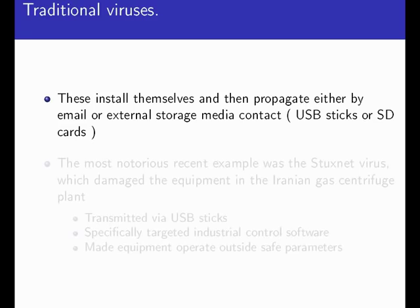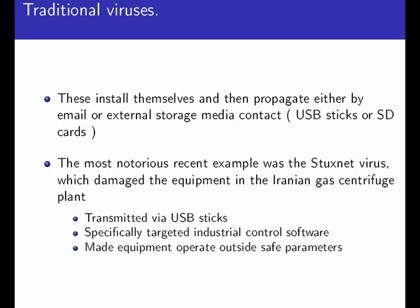Traditional viruses install themselves and then propagate either by email or by external storage media like USB sticks or SD cards. The most notorious recent example was the Stuxnet virus, which propagated via USB sticks. The US distributed USB sticks with this virus on the market in Iran. Some of them got onto machines used for controlling centrifuges. These machines had been isolated from the internet, but the virus was still able to take over control, target the industrial control software, and operate the centrifuges outside safe parameters so they experienced excessive wear and tear and broke down.